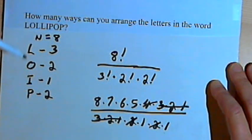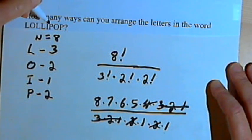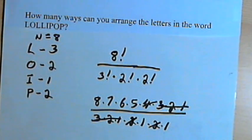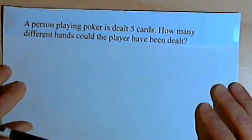Okay? So that's how you're going to deal with arrangements, permutations, when you've got repeats. And let's do one more. A person playing poker is dealt 5 cards. How many different hands could the player have?